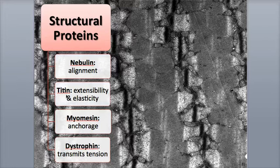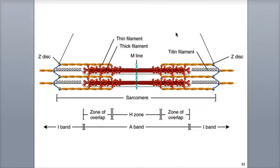Titin is a giant protein — hence the name — that runs half the length of the sarcomere, from Z-disc to M-line. In this diagram of the sarcomere, we can see titin shown in gray, where in one sarcomere there are two molecules of titin. Because it is attached to the M-line here in the middle of the sarcomere, and the M-line is anchored to the thick filaments, titin helps stabilize the position of the thick filaments here in the center of the sarcomere.